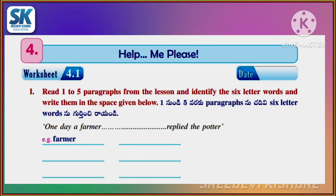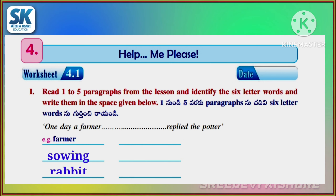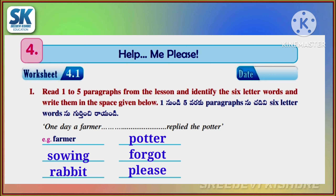Read paragraphs 1 to 5 from the lesson and identify the 6-letter words and write them in the space given below. Example: Former, Sawing, Rabbit, Potter, Forgot, Please, Reason.